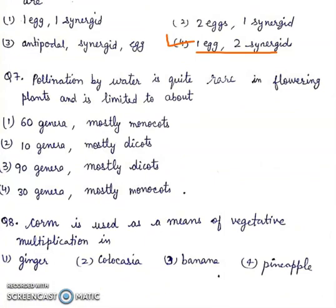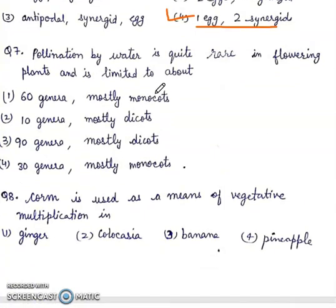Question 7. Pollination by water is quite rare in flowering plants and is limited to about: 1. 60 genera mostly monocot, 2. 10 genera mostly dicot, 3. 90 genera mostly dicot, 4. 30 genera mostly monocot. Right answer will be 4th: 30 genera, mostly monocots.